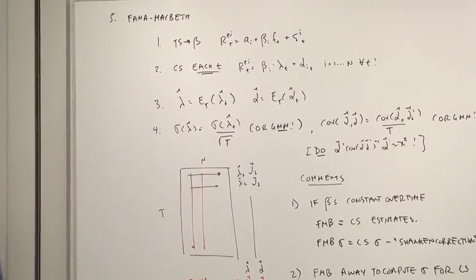First, run the time series regression again to find the betas, same as we did for the cross-sectional regression.